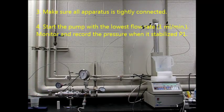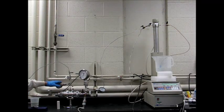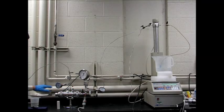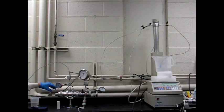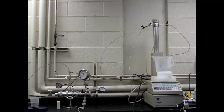Number three, make sure all fittings are tightly connected, otherwise you might have a leak and that will lead to inaccurate measurements. Number four, start the pump with the lowest flow rate, which is 1 milliliter per minute, then monitor and record the pressure when it's stabilized. Record P1 and P2.